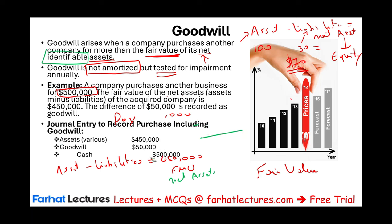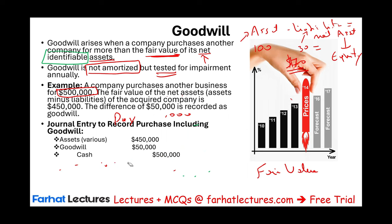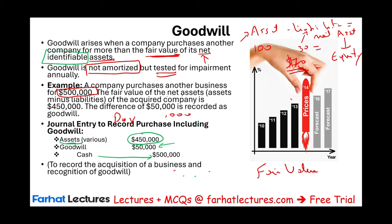When you buy the company, you debit their various assets minus liabilities at a net of $450,000, you credit cash of $500,000, and the difference is goodwill — $50,000 — because you cannot identify it. Therefore the difference is recorded as goodwill. What do you do with it? You test it on an annual basis for impairment, which basically means you determine if it has lost value.